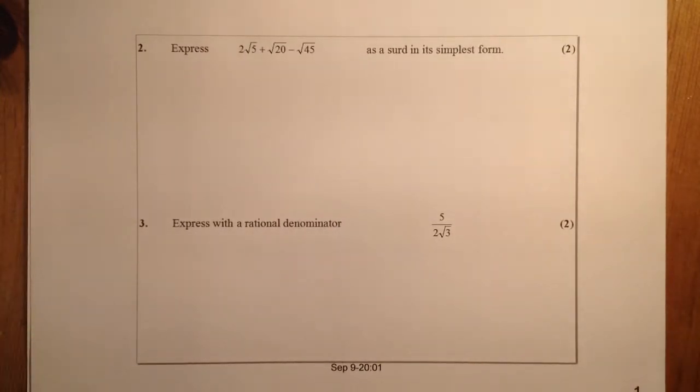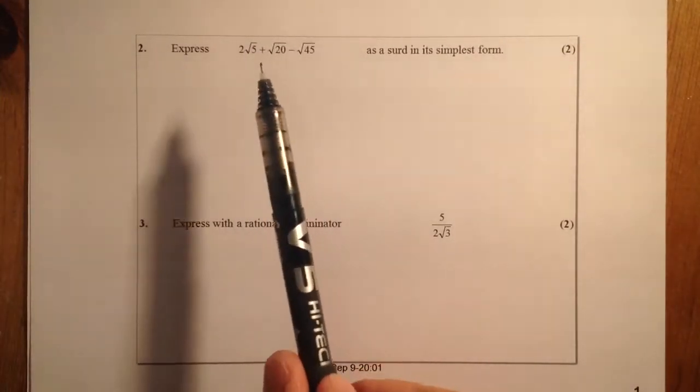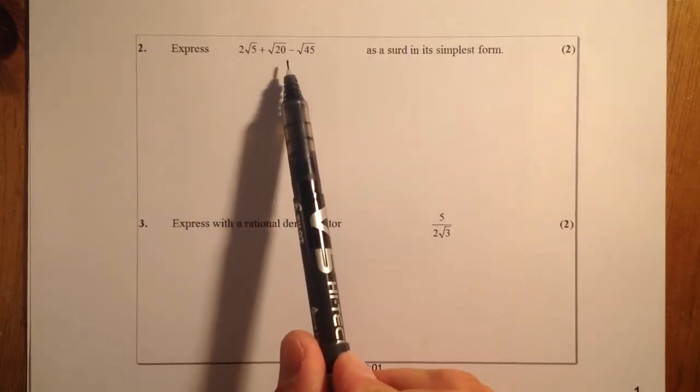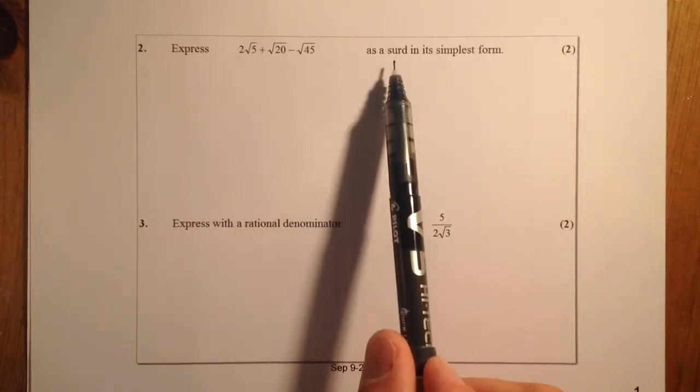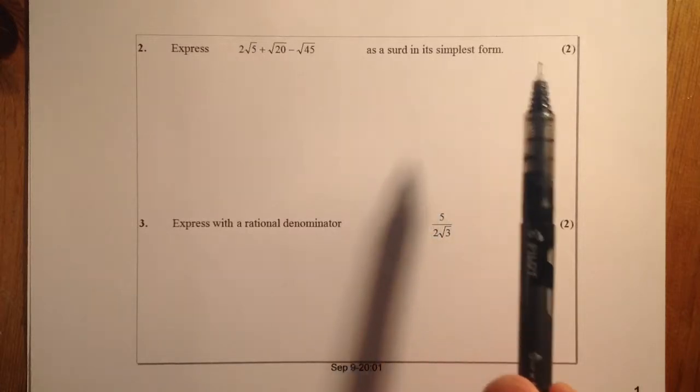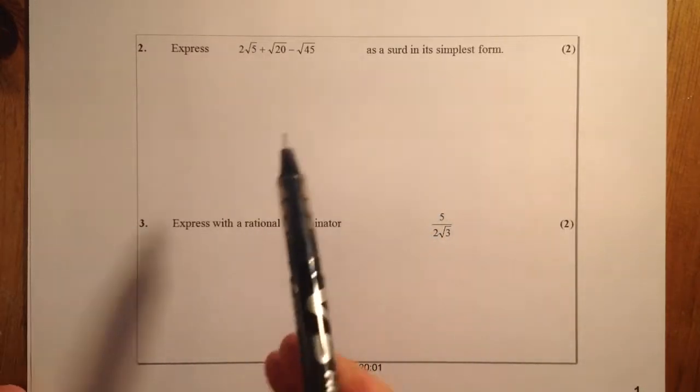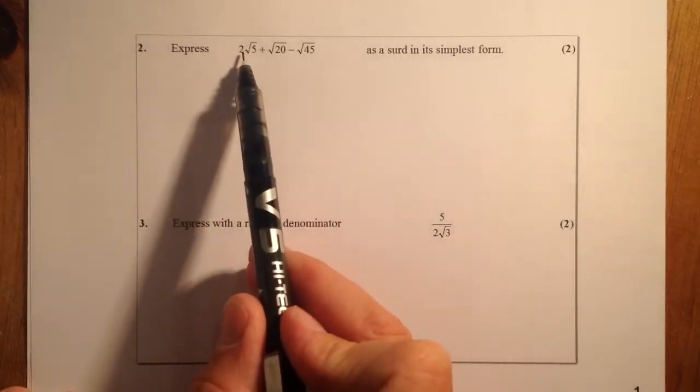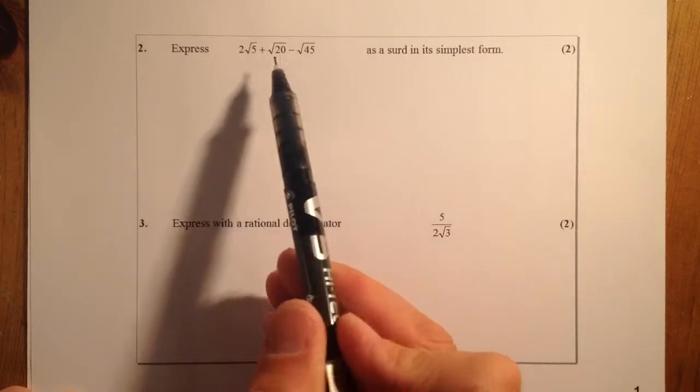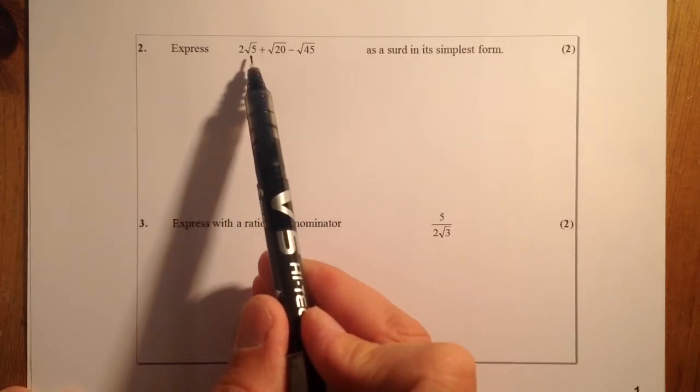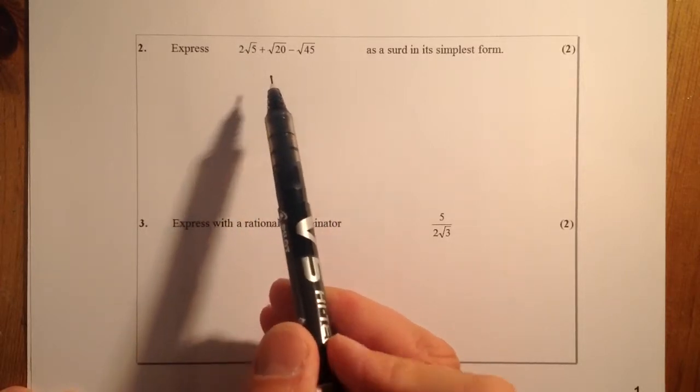Right, so in this one here we have to express 2 root 5 plus root 20 minus root 45 as a surd in its simplest form. Right, so we've got a bit of simplifying to do, especially with these two here. This can't be simplified any further. And again, if I'm looking for a clue, the kind of root 5 is going to kind of help me out a wee bit here.